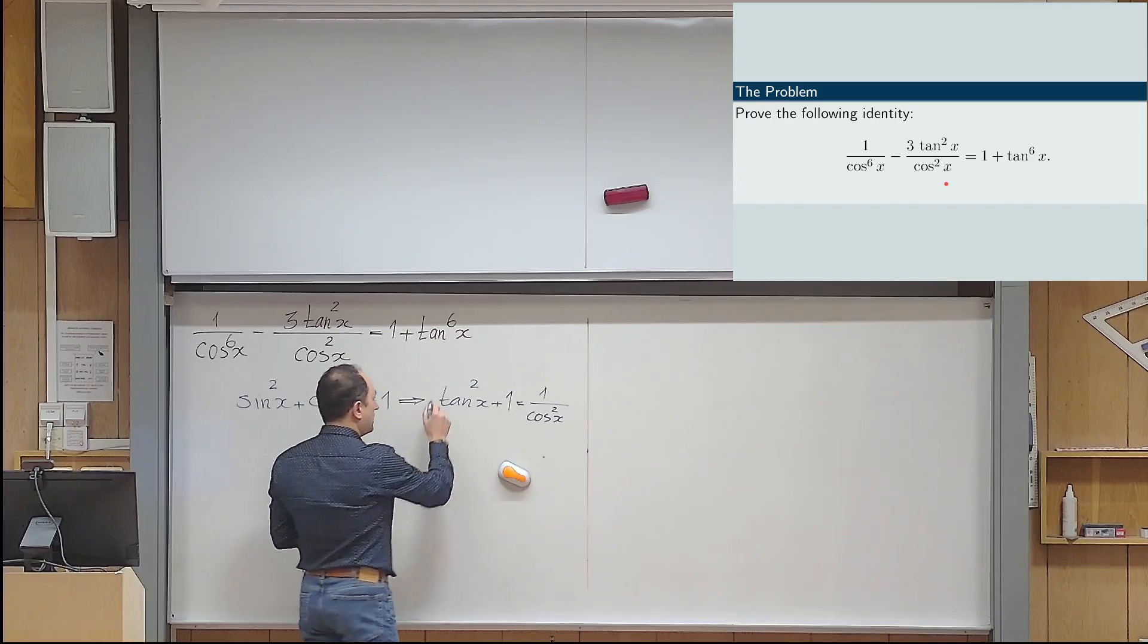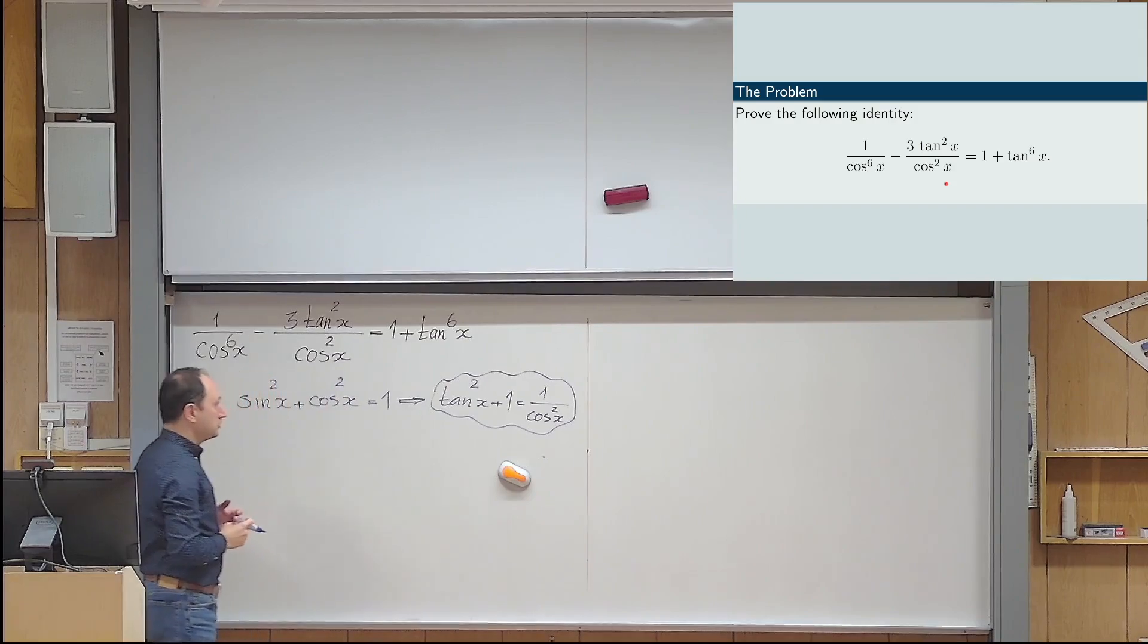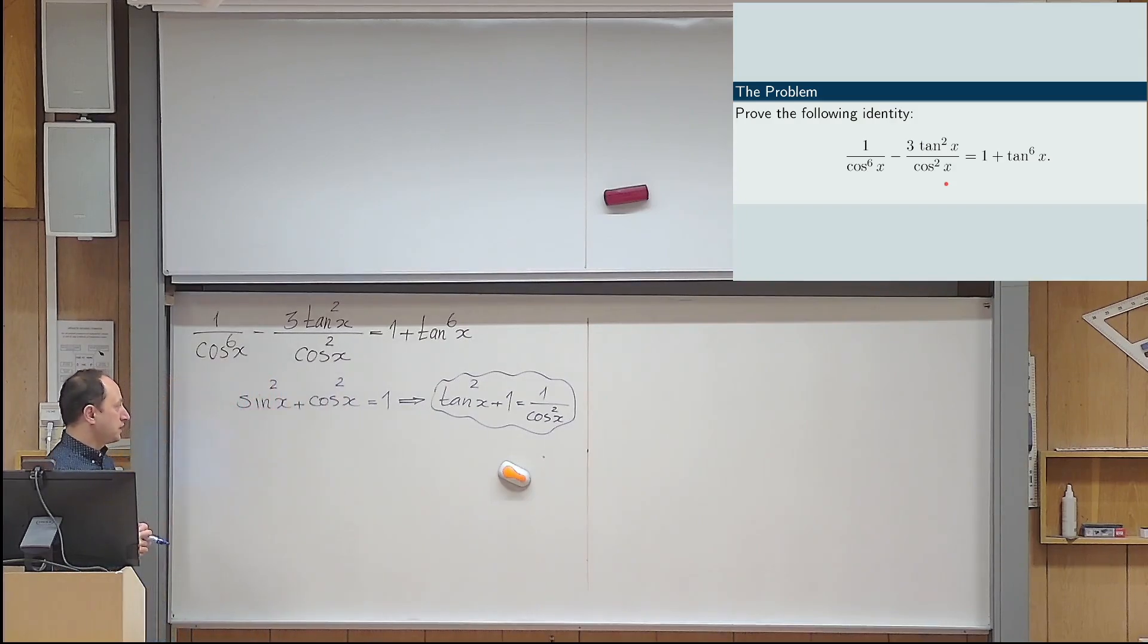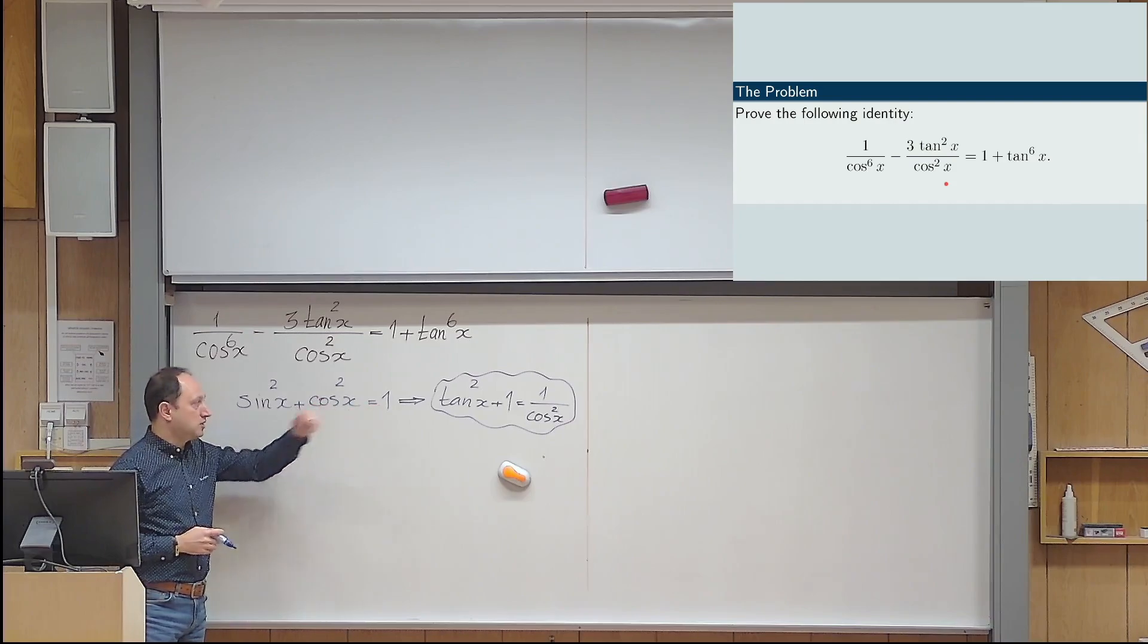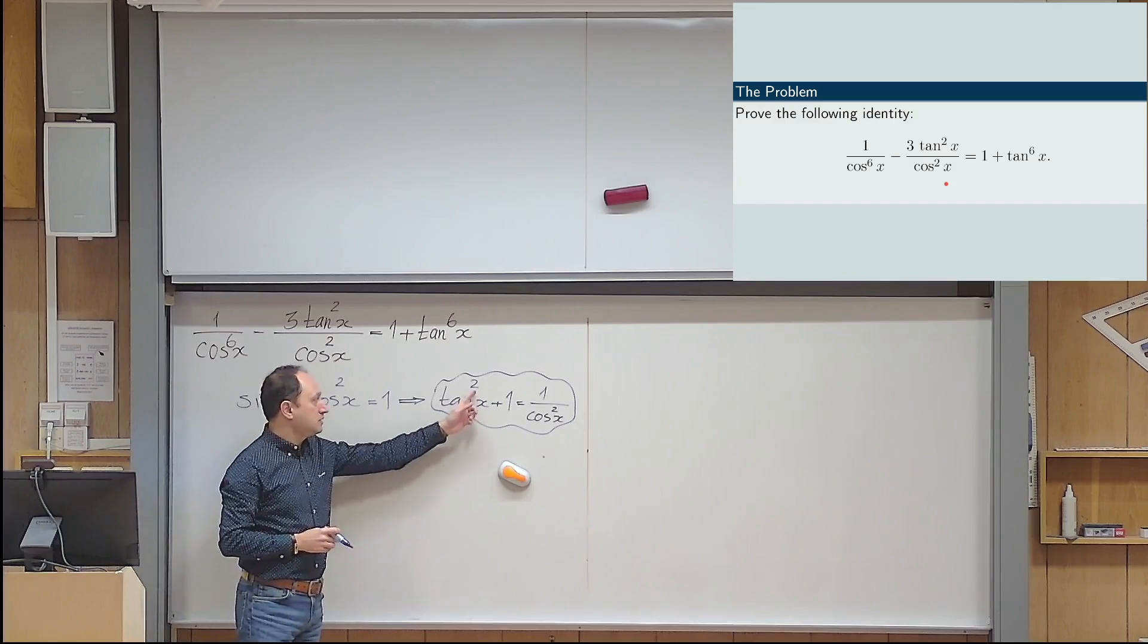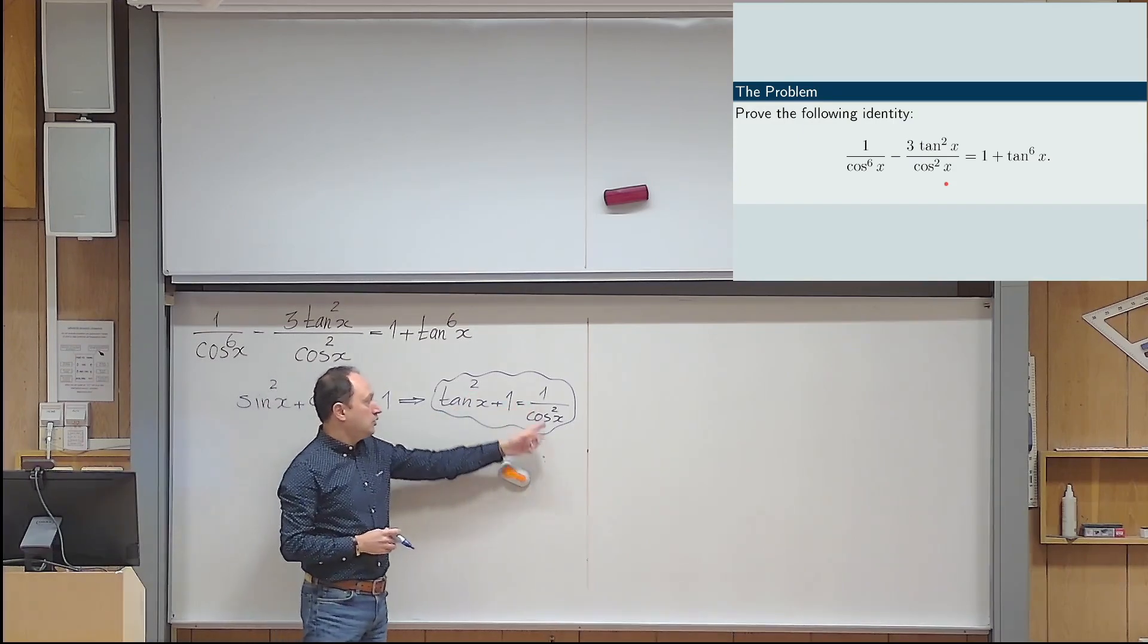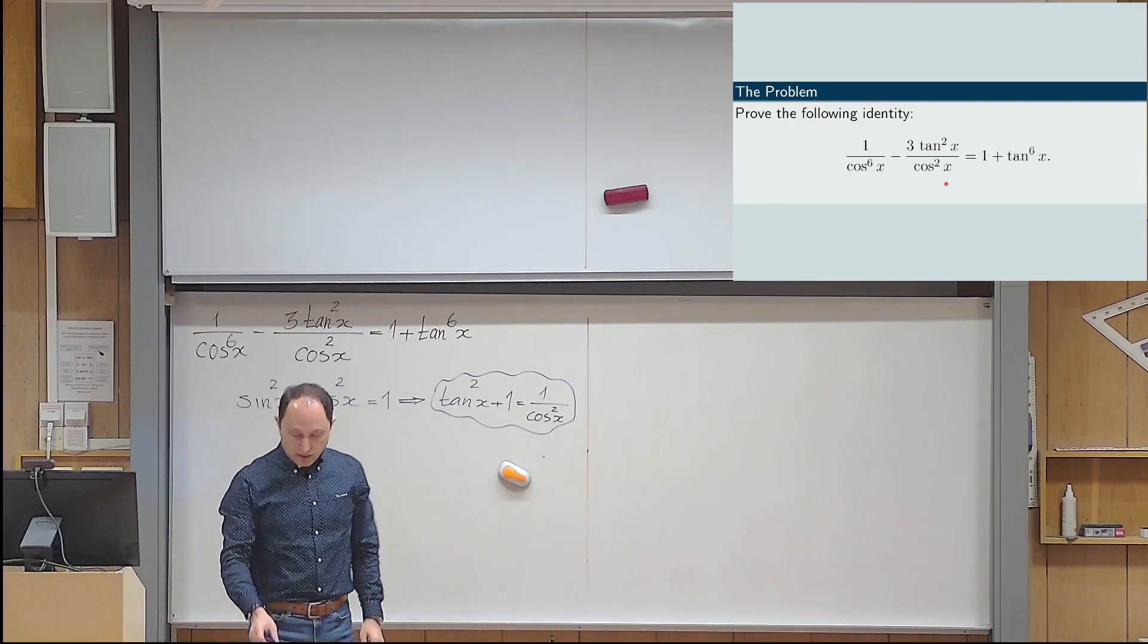And the right-hand side becomes 1 over cosine x squared. So, that is the identity that I want to recommend you if you want to be good in solving trigonometric problems. That is also famous. So, of course, this is the very basic one, the fundamental one, but that's also somehow very useful. So, 1 plus tan x to the power of 2 is 1 over cosine x to the power of 2.